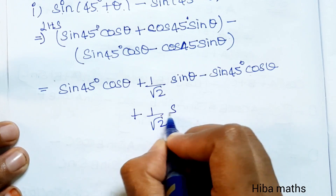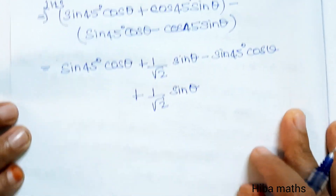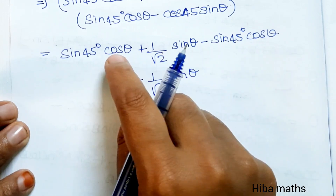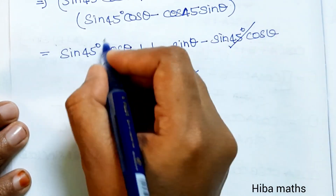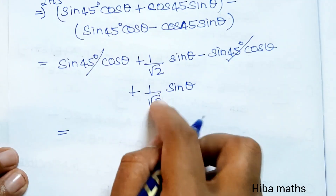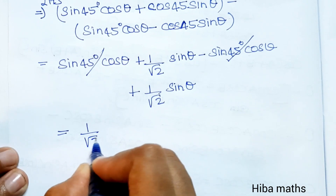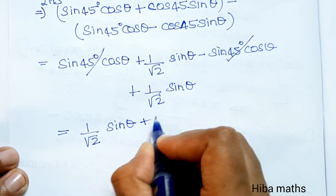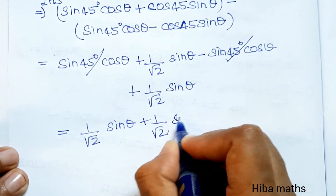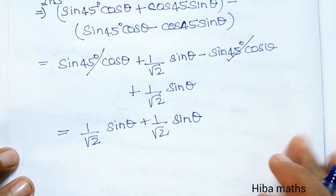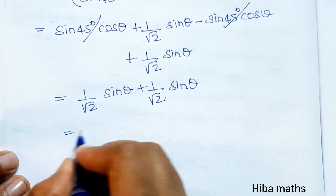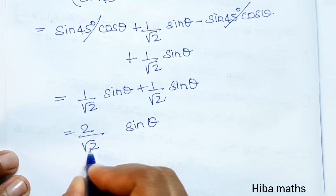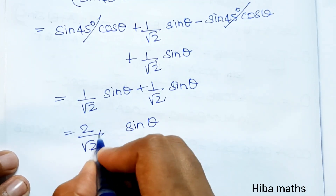The sin(45°)·cosθ terms cancel out. We are left with (1/√2)·sinθ plus (1/√2)·sinθ, which equals 2/√2·sinθ.